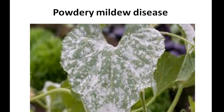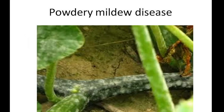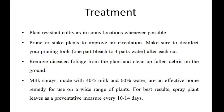Systemic fungicides, due to their single-site mode of action, are prone to resistance development, and the powdery mildew fungi have demonstrated the ability to develop resistance to these fungicides, causing severe infection in leaves and stems.